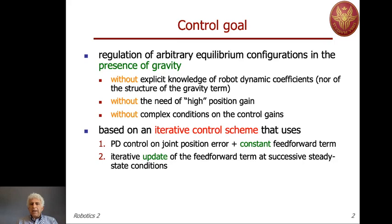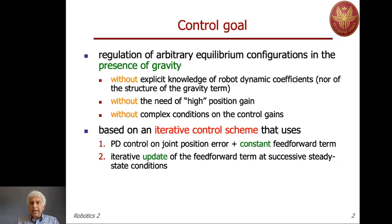The scheme is based on iterations that are not repeated trials of the same motion task, but require some intermediate stage while moving toward the destination. The control law is very simple: it is a PD control on the joint position error, to which we add a constant feedforward term. We will iteratively update this feedforward term while we move from one steady state condition to another under the action of this control law.